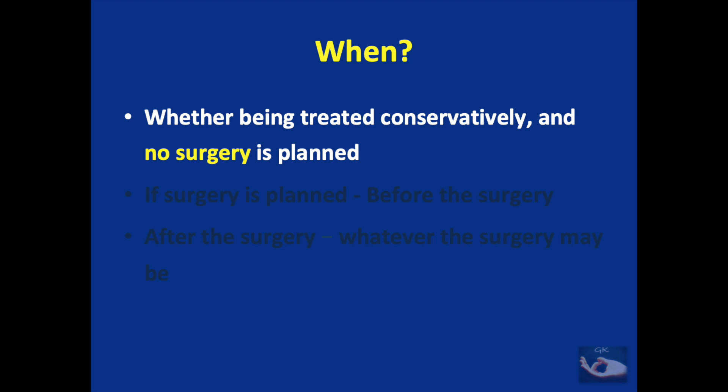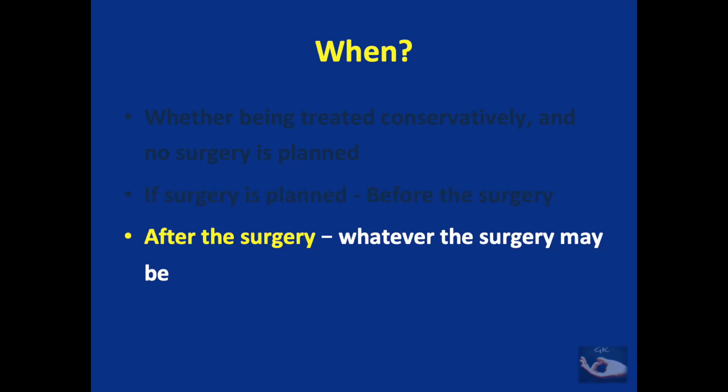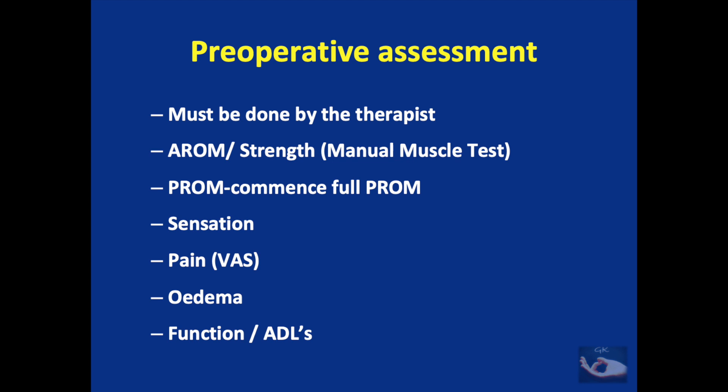Physiotherapy plays an integral part of the management of brachial plexus injuries. Whether the patient is being treated conservatively and no surgery is being planned, even then the patient requires physiotherapy. If surgery is being planned as part of the reconstruction, the patient must be seen by the therapist and given necessary physiotherapy. After the surgery, the patient once again requires therapy to ensure a good follow-through of the surgical procedures. After the surgeon does a thorough clinical examination, the patient is sent to the therapist, who first starts by doing a good assessment to know the baseline condition at which therapy is started.